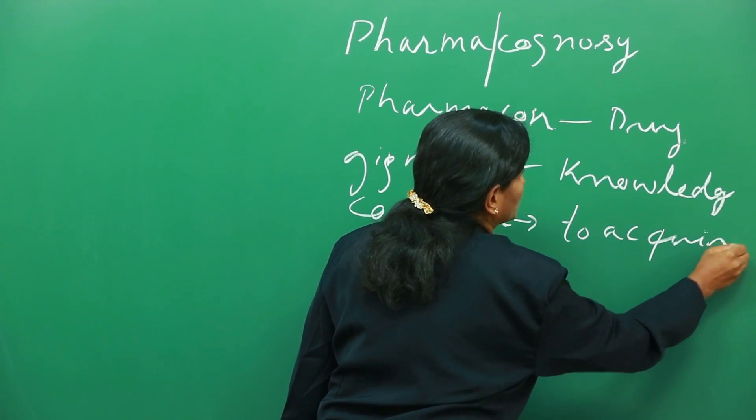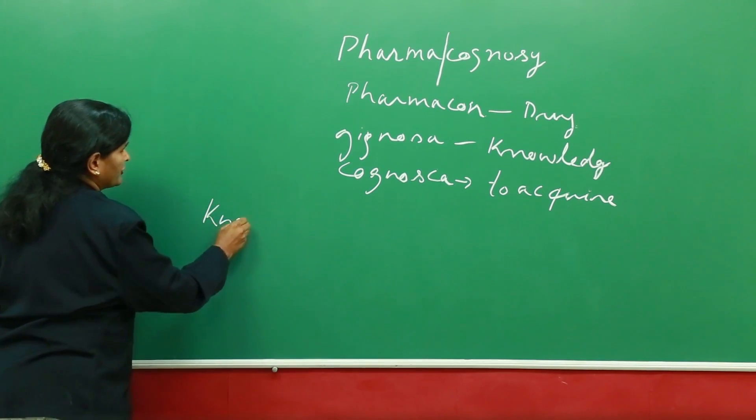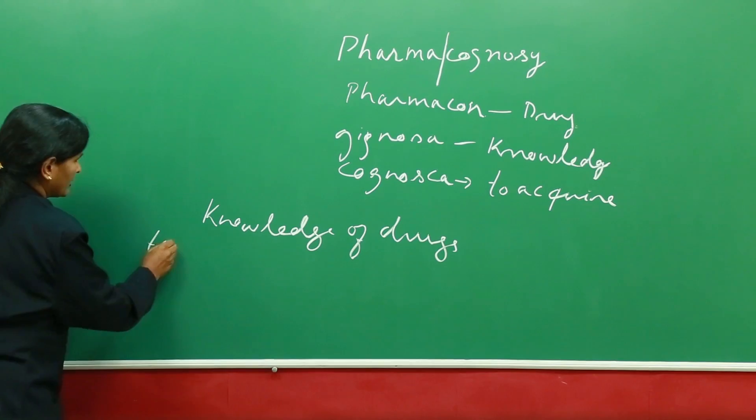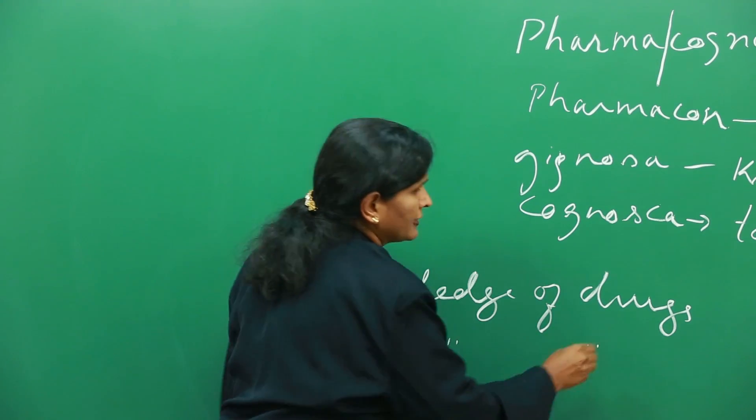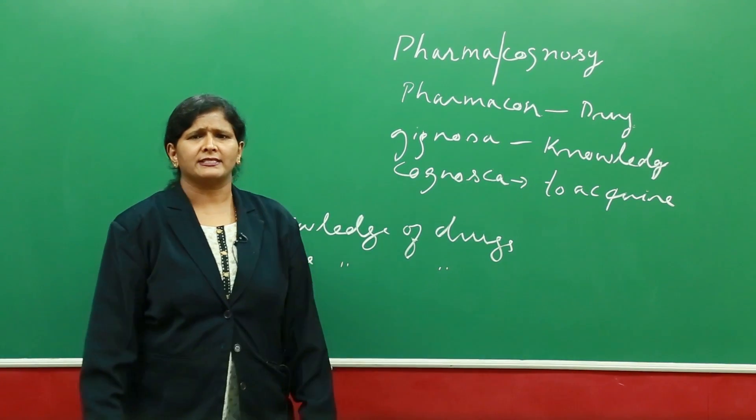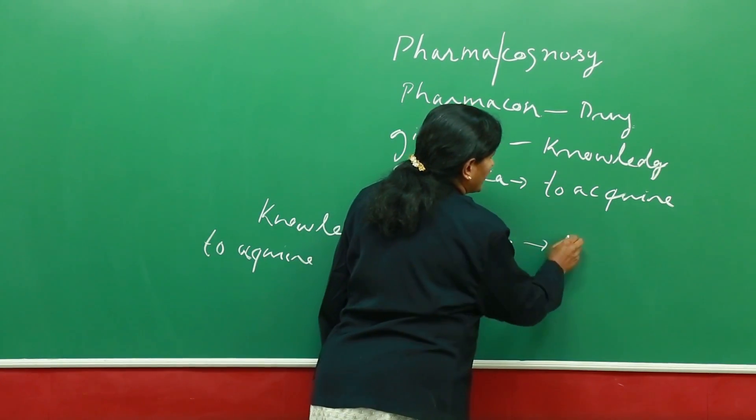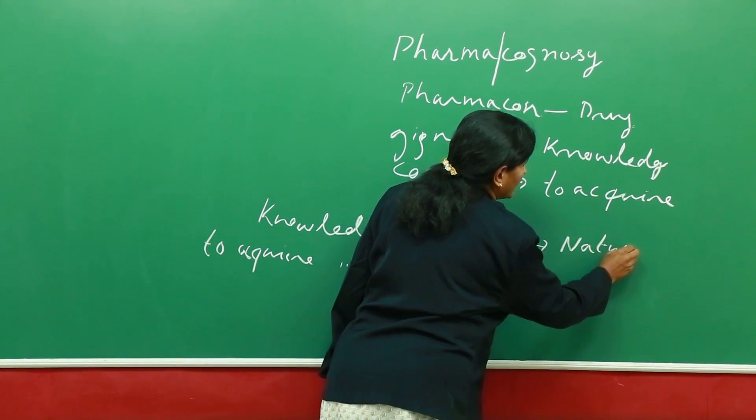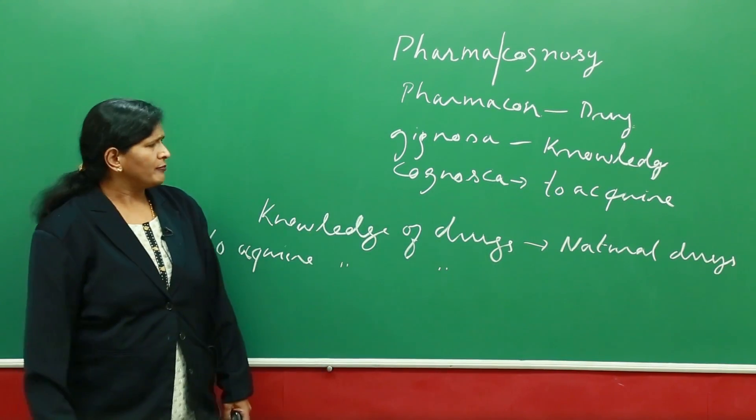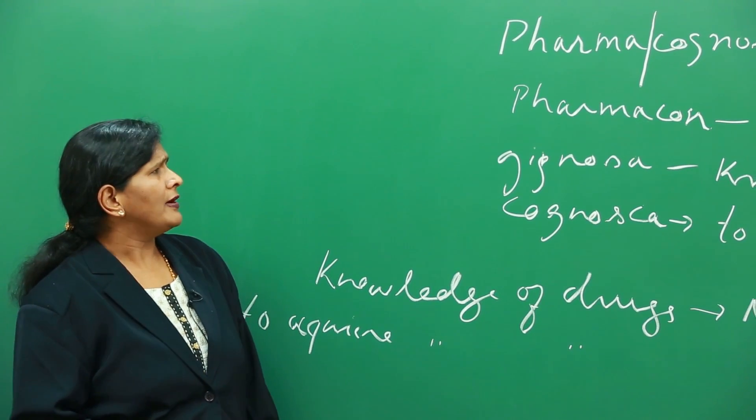If you put these two together, the pharmacognosy word means the knowledge of drugs, or it means to acquire or to know the knowledge of drugs. Pharmacognosy we can say is an applied science which is concerned with knowledge of drugs, natural compounds or natural drugs. Acquiring the knowledge of natural drugs by applying various scientific principles is what is called pharmacognosy.